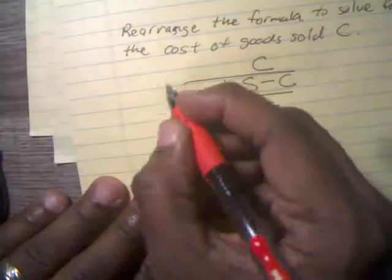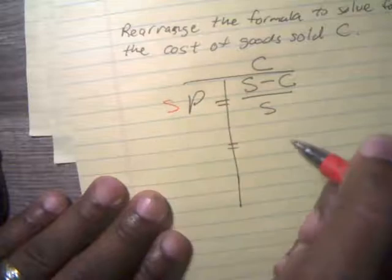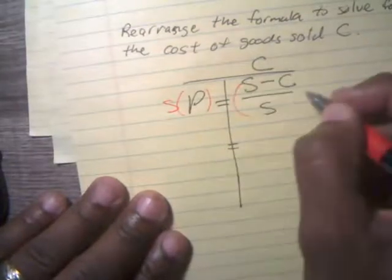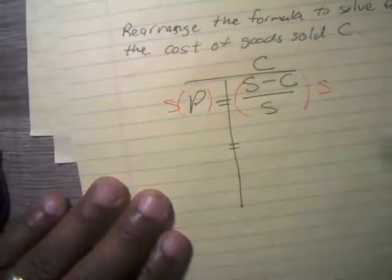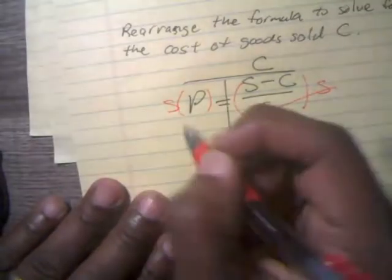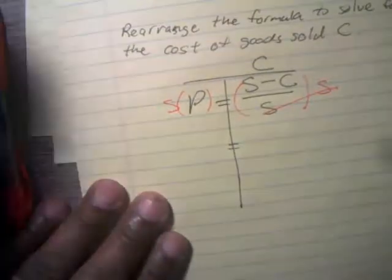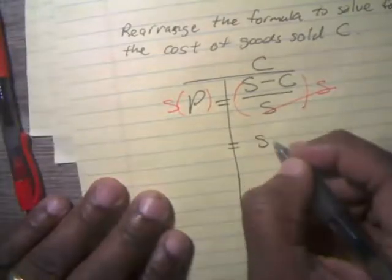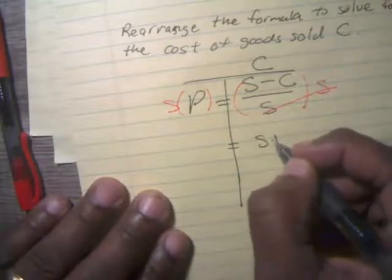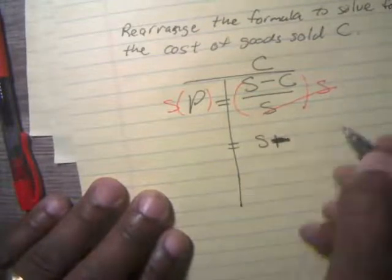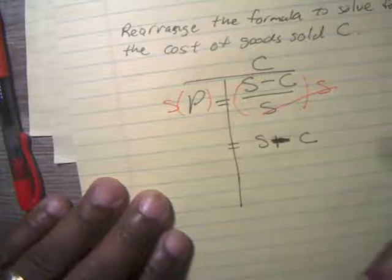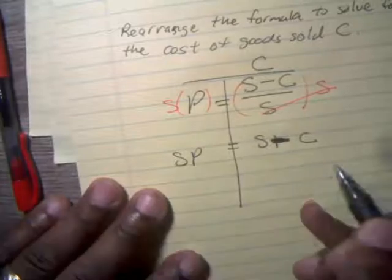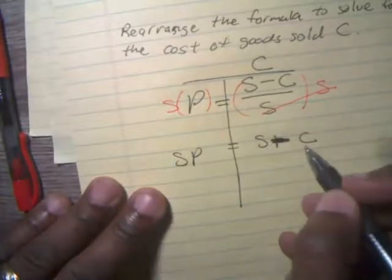We are going to multiply both sides by S, and we're going to multiply this side by S. That way these S's will divide out, and that's just going to leave me with SP on that side and S minus C on this side.